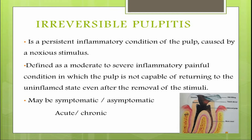As the name indicates, in irreversible pulpitis, the inflammation is completely irreversible, which means that the pulp is not capable of returning to an uninflamed state even if the noxious stimuli is completely removed. It is a persistent inflammatory condition defined as a moderate to severe inflammatory painful condition in which the pulp cannot return to the uninflamed state even after removal of the stimulus.